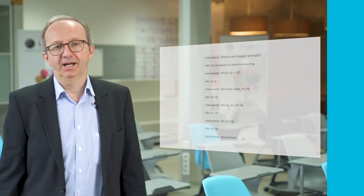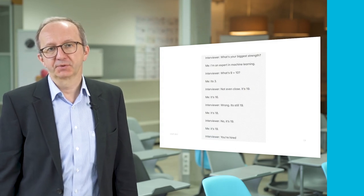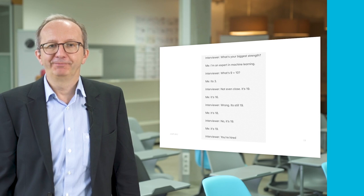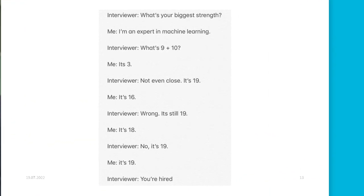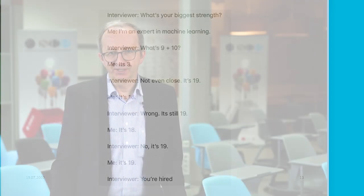To explain machine learning with a small example: in an interview, asked what my biggest strength is, I say I'm an expert in machine learning. The interviewer then asks what is 9 plus 10. I make my first guess — 3. Not even close, it's 19. I guess 16. Wrong, still 19. I guess 18. No, it's 19. I guess 19. You are hired! That's the way machine learning works — it's a trial-and-error process that slowly converges to the right solution. The system detects rules from the data rather than learning them from a symbolic representation.